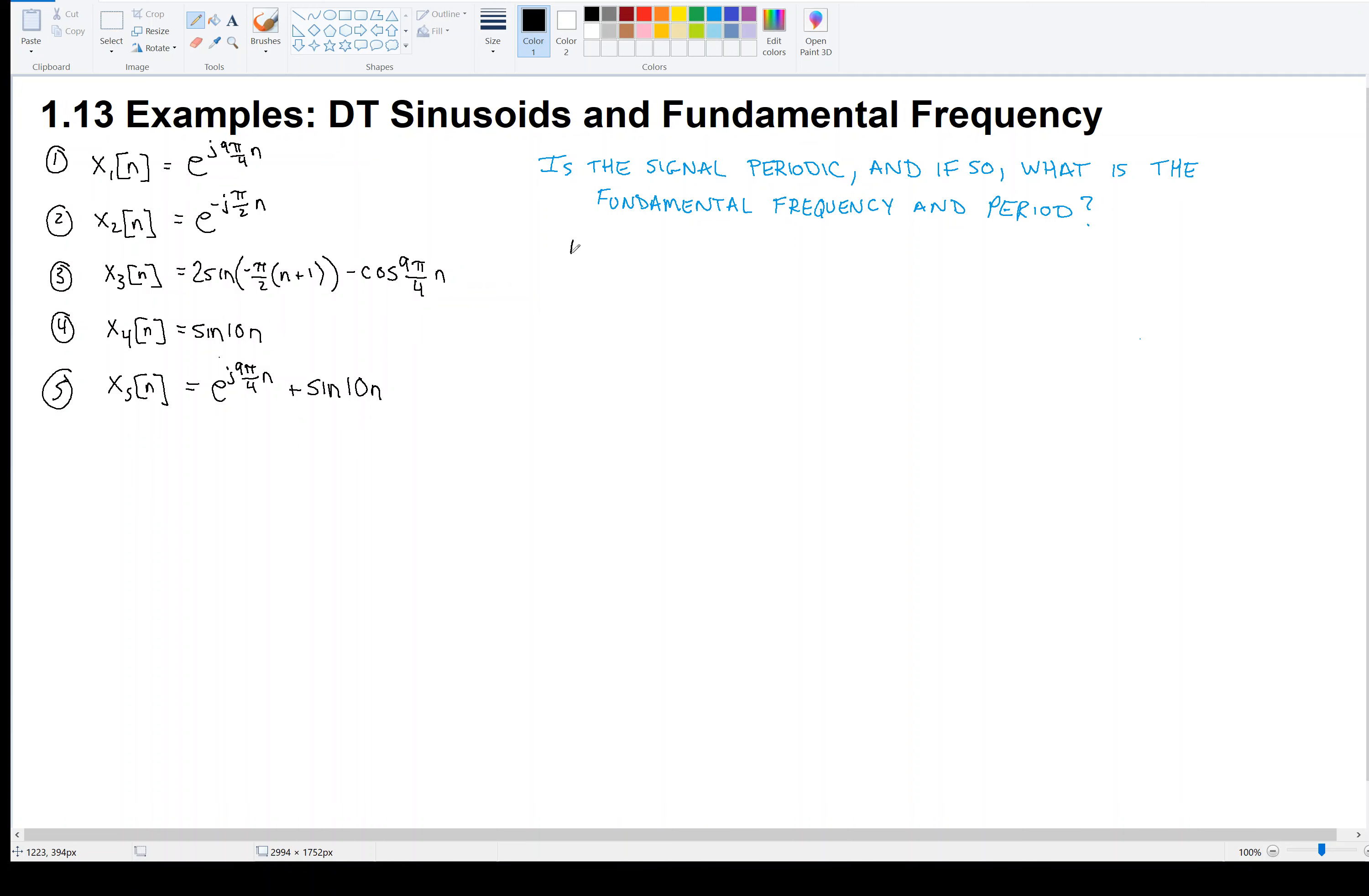Let's start with example number one: e to the j 9π over 4 times n. We already said that this is part of that form where we have e to the j ω₀n. So right away, we identify a possible fundamental frequency of 9π over 4. And I say possibly because we have to figure out, is there an integer k times 2π over another integer n₀. That's an integer k. Are there integers that satisfy this relationship? If so, then yes, it's periodic.